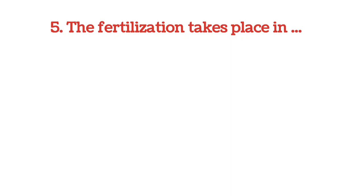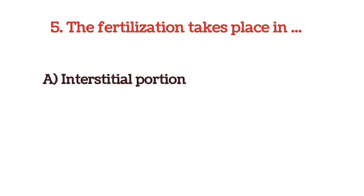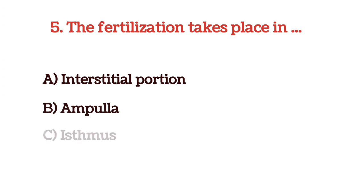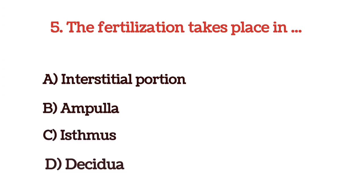The next question: fertilization takes place in — options are interstitial portion, ampulla, isthmus, and decidua. The answer is option B, ampulla.